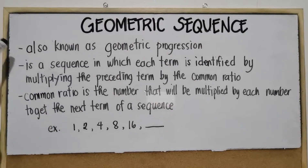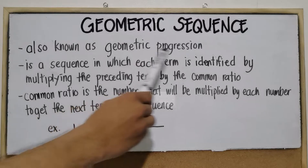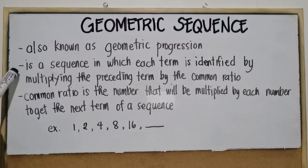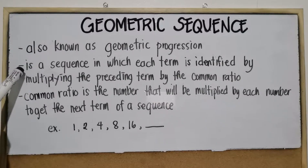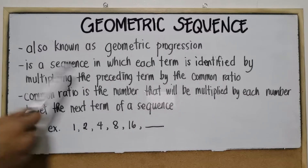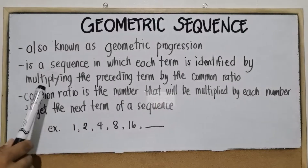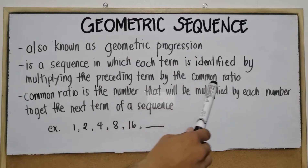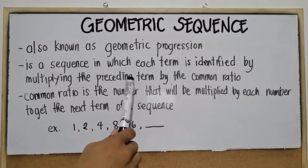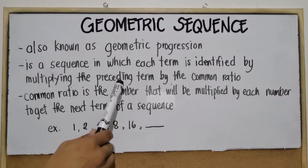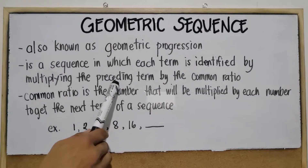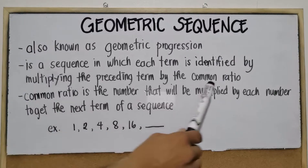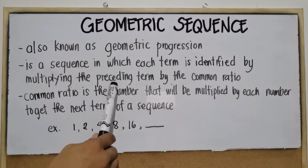Geometric sequence is also known as geometric progression. When we say geometric sequence or geometric progression, it is a sequence in which each term is identified by multiplying the preceding term by the common ratio. The preceding term is the term found before. To get the next term, we multiply the common ratio with the preceding term.